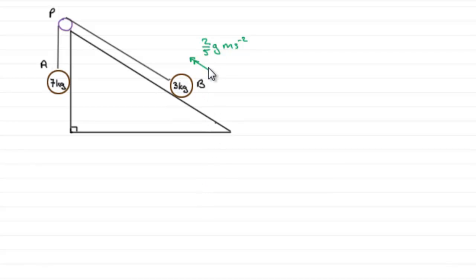And what I've done here is marking the acceleration of B that we found in the first part, two-fifths g meters per second per second. So in order to do this, B started say at a point down here and it started at rest. So we've got an initial velocity here of zero meters per second.